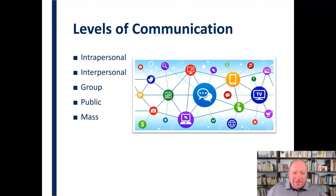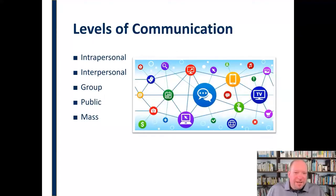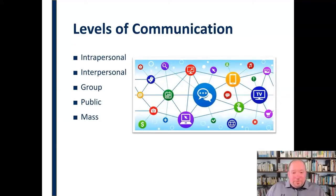Finally, we have mass communication. This is communication where a person or group of people is trying to communicate with as broad an audience as they possibly can, and there's always some form of technology used as a medium or channel. It's the same seven elements, but different ways that we apply them and different rules that apply to those same seven elements. The transactional model of communication is at work in every one of these levels or forms of communication, so those seven elements again become very important.